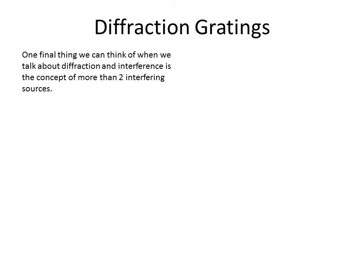One final thing we can say about interference is the concept of diffraction gratings. Instead of combining interference and diffraction together, we can ask what happens if instead of using a double slit we use a triple slit — that is, what happens if we have more than two interfering sources.